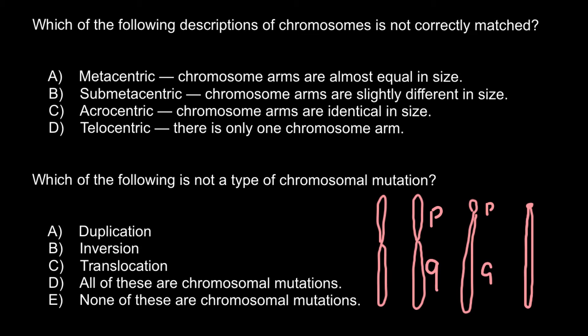So as you can see, answer C is a wrong match. The next question: which of the following is not a type of chromosomal mutation? Duplication is one variant of mutation when a fragment may duplicate itself on the same chromosome. Inversion is another example of mutation when one fragment cuts itself and is inserted in the same place in inverse order.